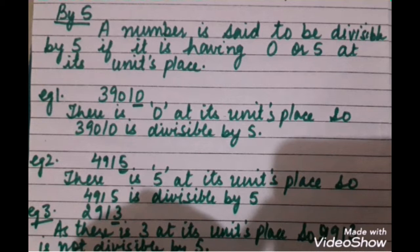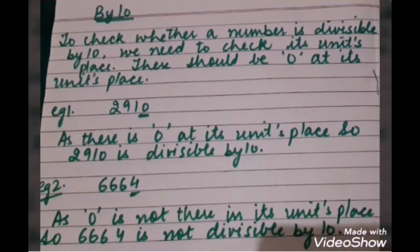Now let us check divisibility by 10. To check divisibility by 10, a number should contain 0 at its units place. In the first example, the number is 2910 — as there is 0 at its units place, the number is divisible by 10. In example 2, the number is 6664 — it does not have 0 at its units place, so it will not be divisible by 10.